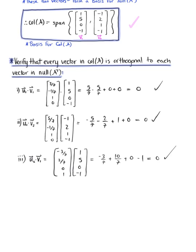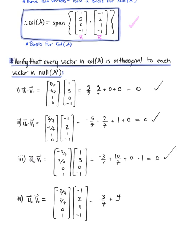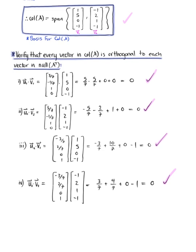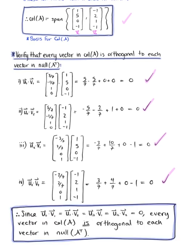Case 4: compute the dot product of u₂ with v₂. Vector u₂ is (-3/7, 2/7, 0, 1) dotted with (-1, 2, 1, -1). Computing: 3/7 + 4/7 + 0 - 1 = 7/7 - 1 = 0. We have officially verified that every vector in the column space of matrix A is orthogonal to each vector in the null space of A transpose by showing that each dot product is zero — making this our beautiful final answer.